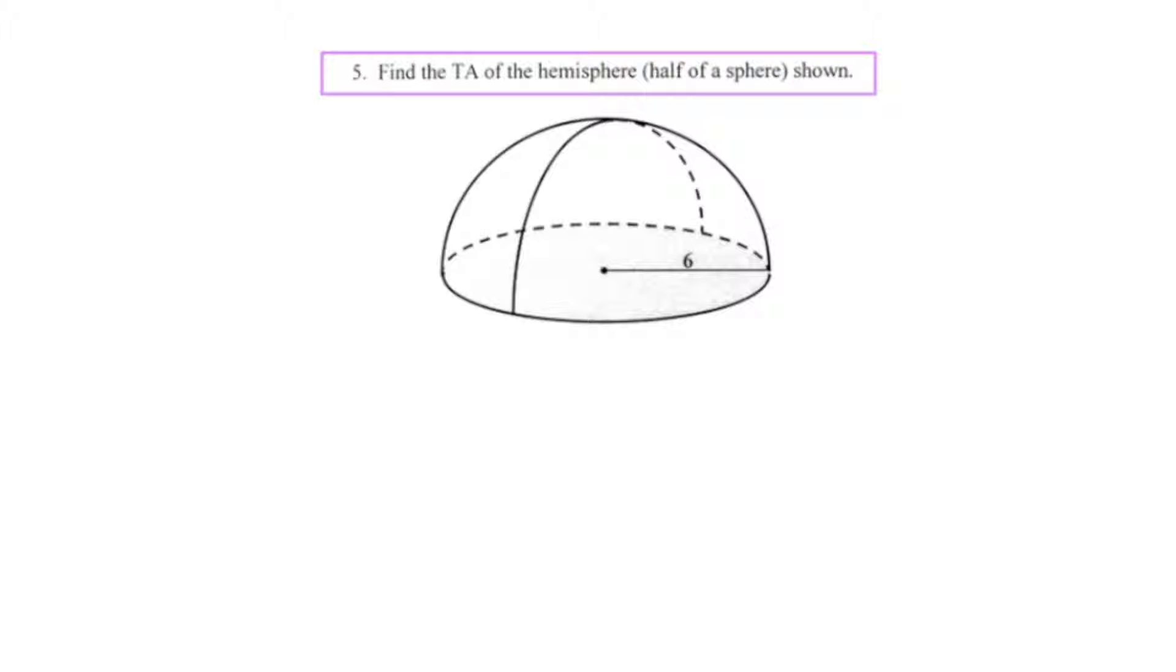And for our final example, we're asked to find the total area of the hemisphere, half of the sphere, shown. And it looks to me like when you slice this sphere in half, you get this cross section, which is a circle, and this particular circle has a radius of 6.